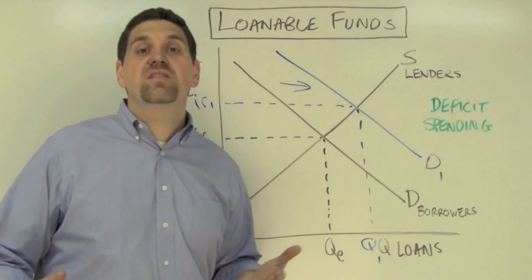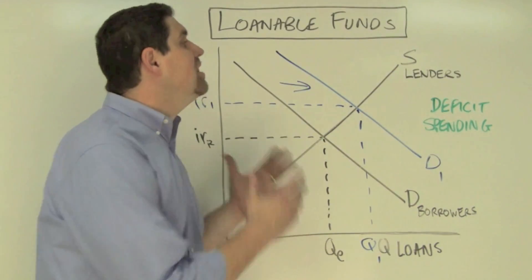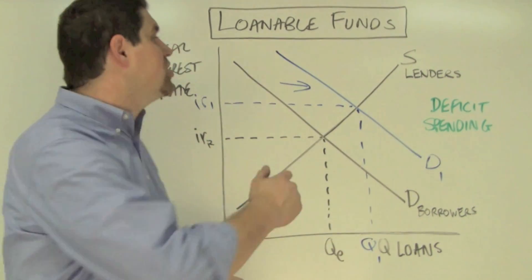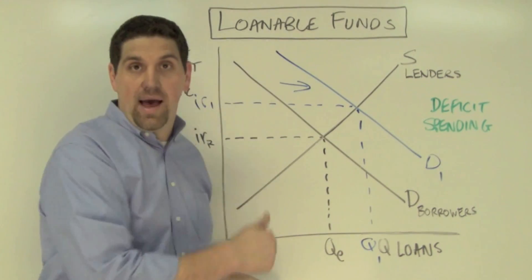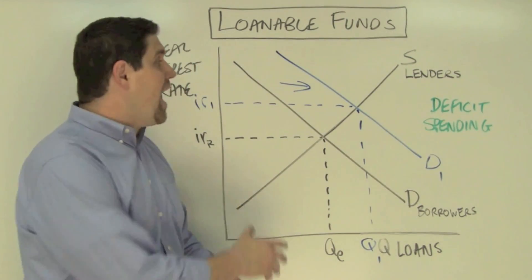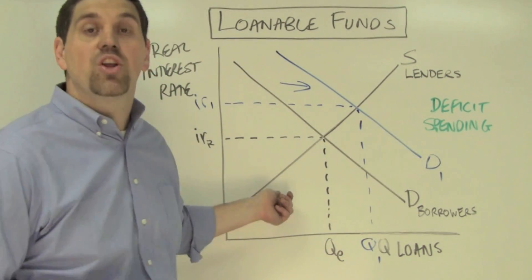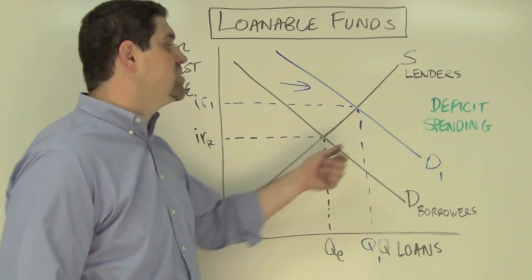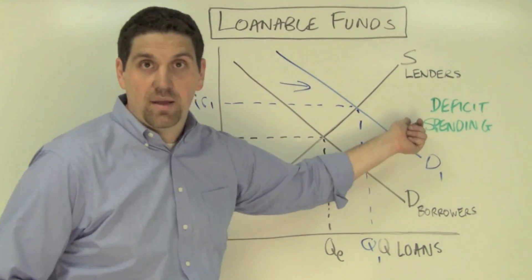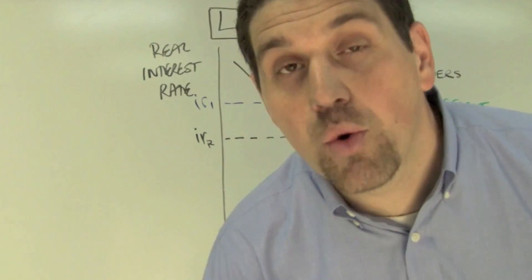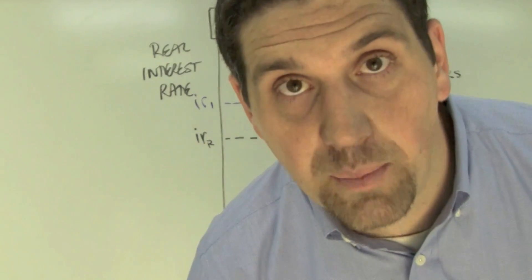The government has crowded me out. Quick bonus round: the writers of the AP test love this idea of crowding out — they ask this question all the time. The majority of the time they ask you questions about the loanable funds market, they're usually asking about deficit spending and the idea of crowding out. So make sure you really understand that concept.